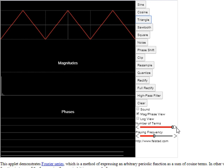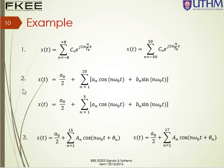Hopefully you understand what Gibbs phenomenon is. Let's test it with some examples. Example one: which of these two equations gives a better representation — n from negative 8 to 8, or n from negative 50 to 50? The answer is n from negative 50 to 50, because it considers more frequency components, giving a better representation of our periodic signal xt based on Gibbs phenomenon.